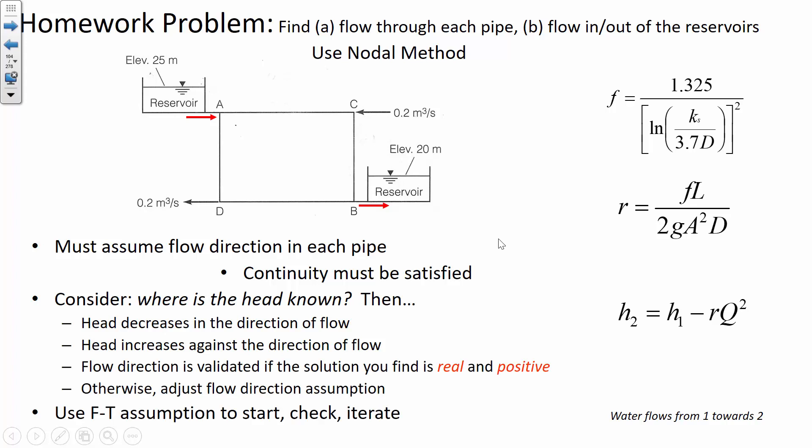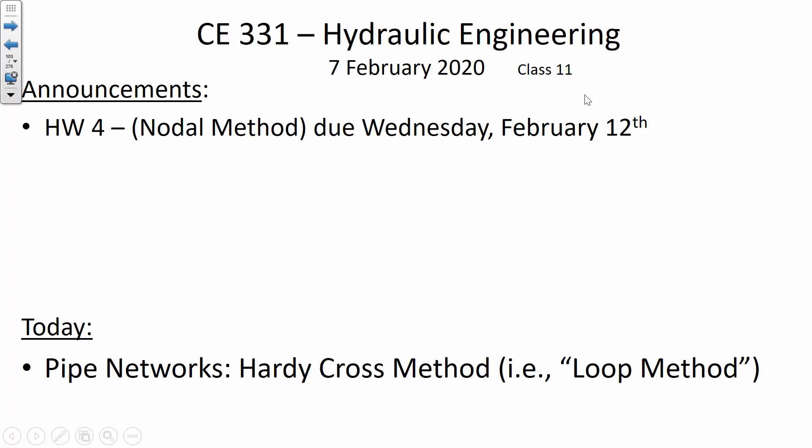This is a summary of what I wrote on the board. Once you find the flow rates through each pipe, you'll need to check the fully turbulent flow assumption. You'll have to redo the process with updated F values — it won't be starting from scratch, just the R value will be slightly different in the second iteration. The assignment is due Wednesday, so ask me questions Monday if you have any.